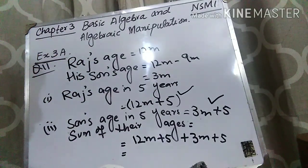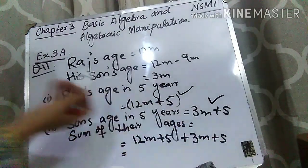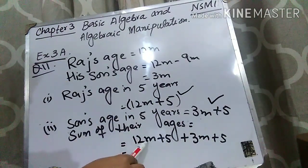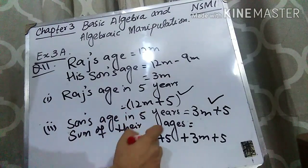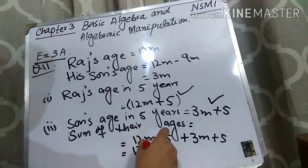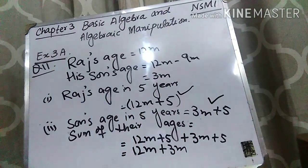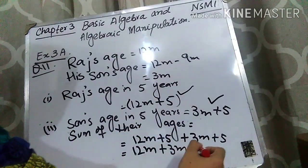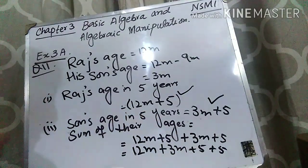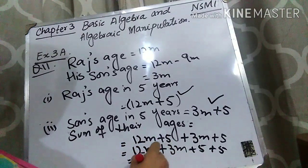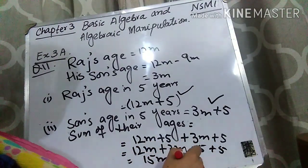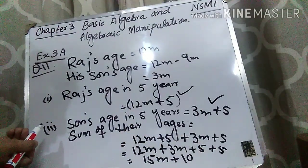Whenever we do addition or subtraction, we solve like terms together. The m-variable terms are like terms, and the constant terms are like terms. So writing like terms together: 12m plus 3m, plus 5 plus 5. Adding: 12m plus 3m equals 15m, and 5 plus 5 equals 10. So the answer is 15m plus 10.